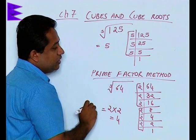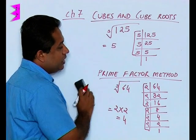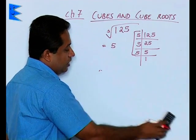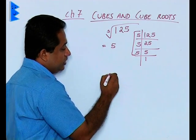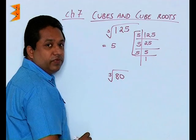So we can find out any number like this. And some numbers may not be perfect cubes. For example, if we are having a number 80 and we find out the factors - the question is, find out whether 80 is a perfect cube or not.